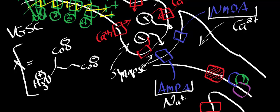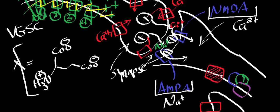Let's say that glutamate first binds to the NMDA receptor. When the glutamate binds to the NMDA receptor, calcium will flux through the postsynaptic membrane into the next axon. Likewise, if glutamate binds to the AMPA receptor, sodium moves through the postsynaptic membrane into the postsynaptic neuron. So depending on what receptor the neurotransmitter binds to, that dictates what ion moves through.